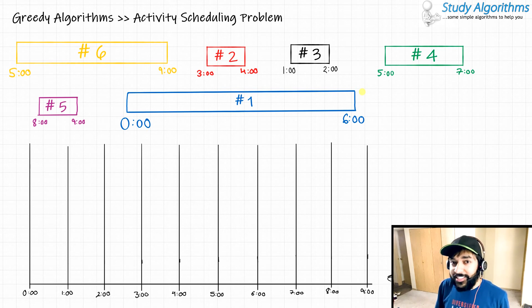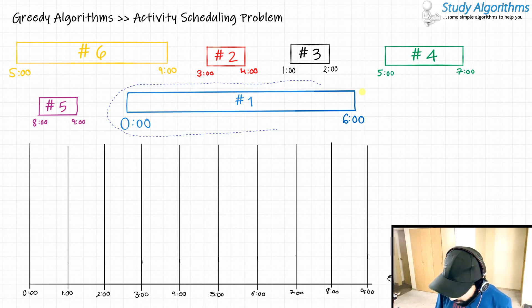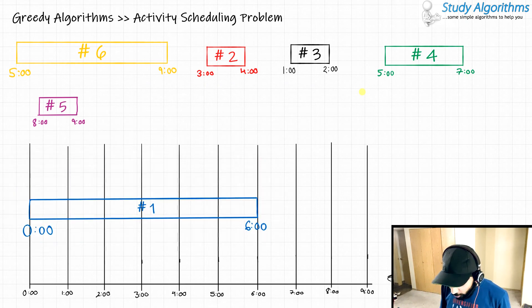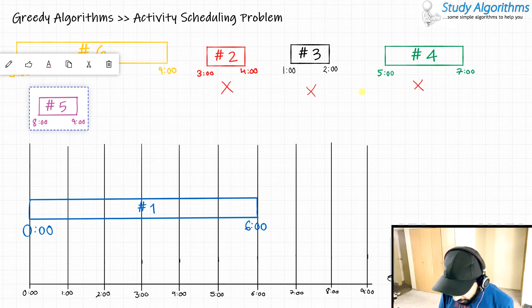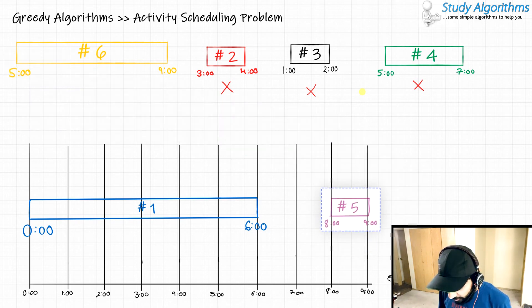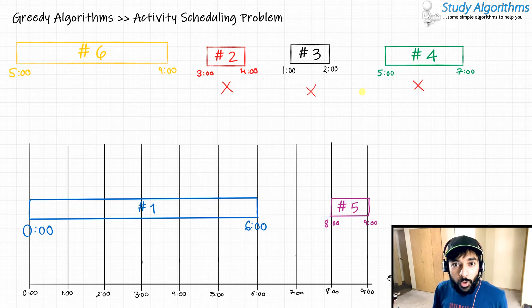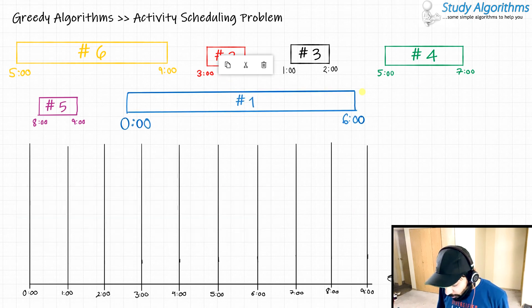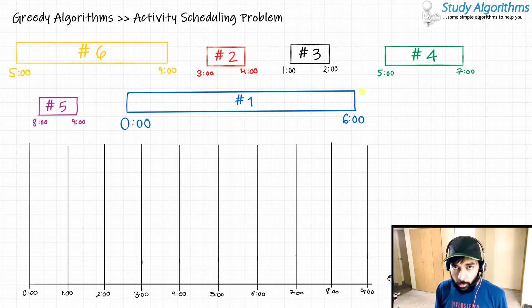Now, given this time frame, I want to do as many activities as possible. Also, when you are doing one activity, you cannot do another activity simultaneously. If you pick up activity number 1 and put it on your schedule, your schedule is now blocked from 0 hours up to 6 hours. That means you cannot pick up activity number 2, number 3, or even number 4. At the most, you can pick up activity number 5 between 8 and 9. There can be a lot of permutations. In our problem statement, we just need to find an optimal way to perform the maximum number of such activities.